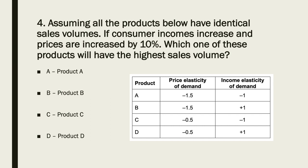Consumer incomes have increased — that's to do with income elasticity of demand. If they've increased, you'd hope for a positive income elasticity of demand, which eliminates A and C. Prices have also increased by 10%, so you don't want much sensitivity in PED — you want inelastic demand. The inelastic number is minus 0.45, so the answer must be D: inelastic price elasticity of demand and positive income elasticity of demand.